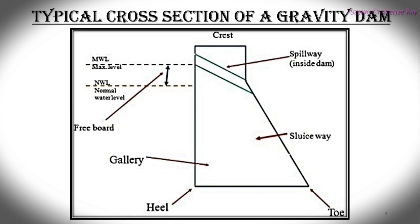Now let us look at the typical cross section of a gravity dam. Various parts are labeled in the figure. From the top, we see MWL — the Maximum Water Level. During the rainy season, the reservoir attains the maximum water level, and the dam and spillway sections are designed to withstand the water pressure at this level. It is also called the High Flood Level.